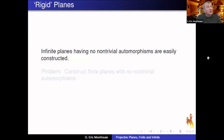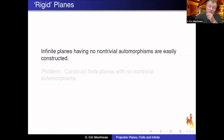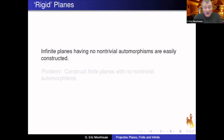In the infinite case, it's easy to construct a plane with no non-trivial automorphisms. One construction is to take a finite partial linear space which is rigid — has no non-trivial automorphisms — and take its free closure; you get an infinite plane which is also rigid. You can do this for any cardinality, using Löwenheim-Skolem type arguments.